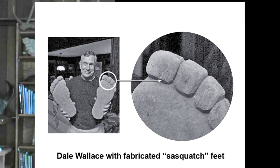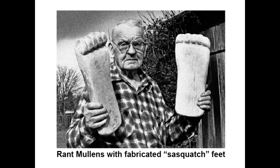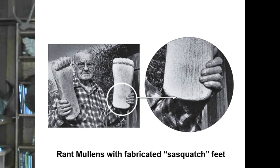Let's look more closely at the evidence brought forward for the Sasquatch as a hoax. Here we have Dale Wallace holding these fabricated wooden feet. Look at the toes more closely — the toes are square. The hoaxer hadn't even bothered to round off the toes. Similarly, from 1982, the Rant Mullins carved wooden Sasquatch feet — the heel is square, he hadn't even bothered to round off the heel.